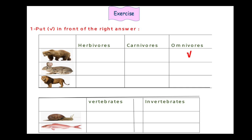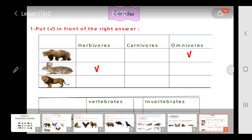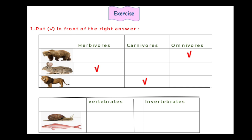Number 2 — rabbit. Rabbit eats plants. So, Junior 2, rabbit is from herbivores. Put a tick on herbivores. Number 3 — lion. Lion eats meat. So, lion is from carnivores. Put a tick on carnivores.